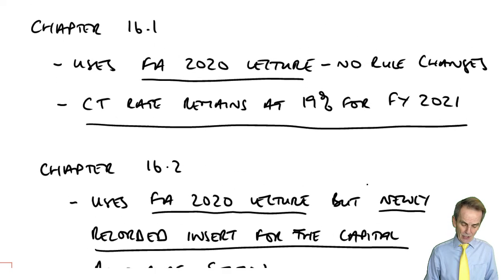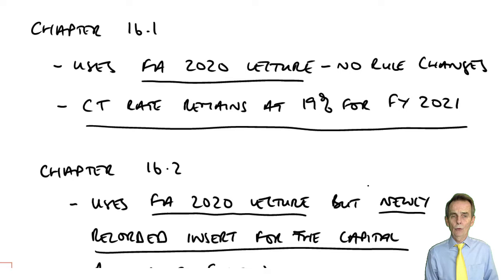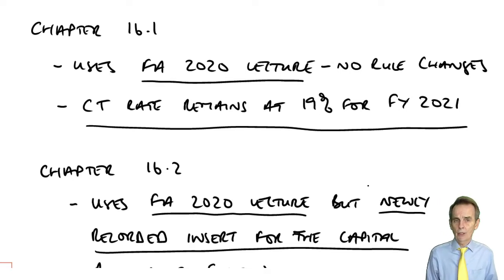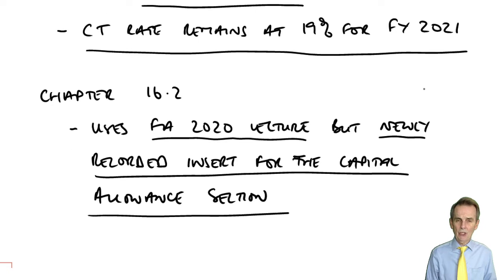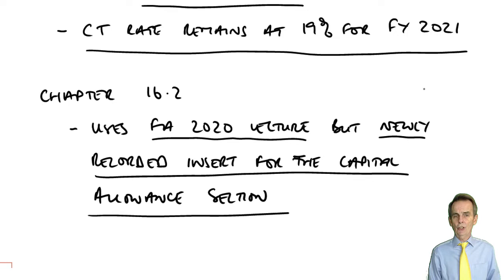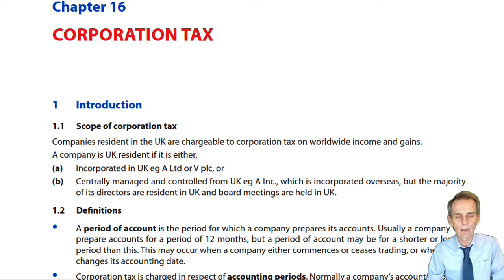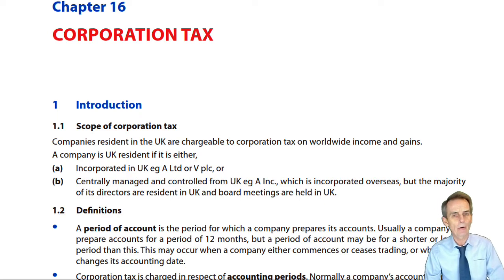Chapter 16.1 is the same lecture as before, noting for financial year 2021 we still have a 19% standard rate of corporate tax. In Chapter 16.2, you'll see mostly the Finance Act 2020 lecture, with a newly recorded part dealing with the new system of capital allowances for companies. Having focused on personal taxation and individuals, we now turn our attention to corporate tax and the taxation of companies.